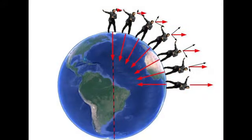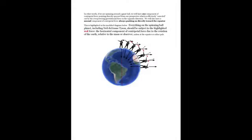Since the effect is mirrored on the southern hemisphere and across the axis of rotation, we can look at just one quadrant. The horizontal red centripetal forces get smaller the farther away from the equator you are because the radius of your circular motion is smaller. Black component forces show the centripetal force relative to the observer's up and horizon view. In other words, if we are spinning around a giant ball, we will have one component of centripetal force pointing directly upward from our perspective, which is effectively cancelled out by the overpowering gravitational force in the opposite direction. We will also have a second component of the centripetal force always pushing us directly towards the equator. This is highlighted in the modified diagram below.